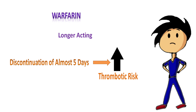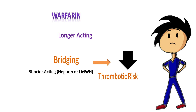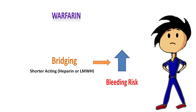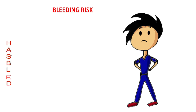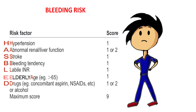In these cases, we might consider bridging, where warfarin is substituted with shorter-acting unfractionated heparin or low molecular weight heparin. Since heparin needs to be withheld for a shorter time, the thrombotic risk may be minimized — keeping in mind that bridging may also increase bleeding risk. For assessing bleeding risk, we have the HAS-BLED score, which takes into account hypertension, abnormal renal or liver function, stroke, bleeding history or predispositions, labile INR values, elderly age, and concomitant use of drugs or alcohol.